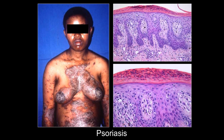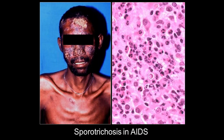Psoriasis is not increased in incidence in HIV AIDS, but the disease can certainly pursue an atypical course or be more dramatic. Sporotrichosis can present with disseminated cutaneous lesions, and unlike conventional sporotrichosis where one sees typical asteroid bodies with the Splendore-Hoeppli phenomenon, in the context of HIV AIDS one often does not see that — you just see these very small fungal organisms in neutrophilic microabscesses within granulomas. Herpes zoster patients with HIV AIDS can develop hyperkeratotic lesions, and scabies can present in an extreme crusted or Norwegian form.